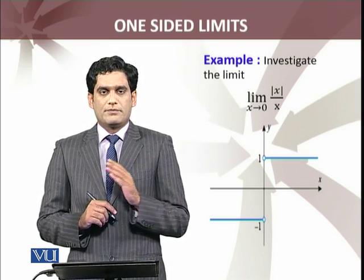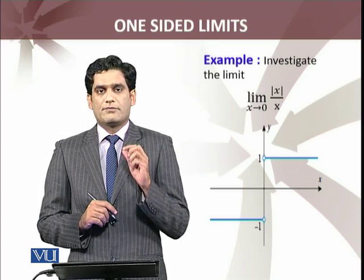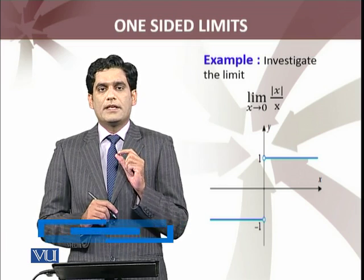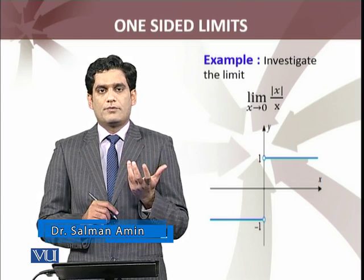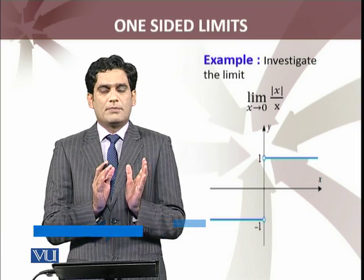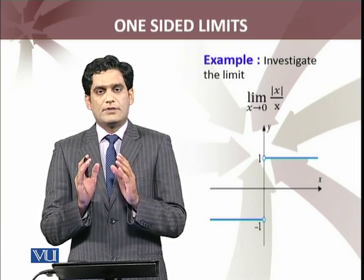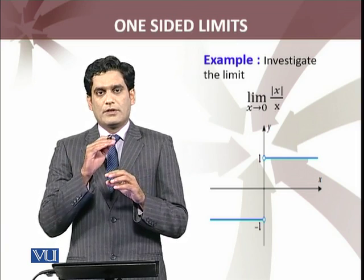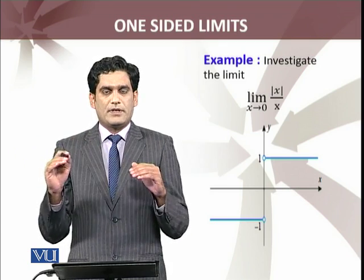If x is a positive real number, x greater than 0, then |x|/x = 1, which you can also see in the plot. But at x = 0, the function is not defined because it becomes the 0/0 form, which is undefined. If x is a negative real number, then |x| = -x, so |x|/x = -x/x = -1. So the graph of the function has open circles at 0, at values 1 and -1.